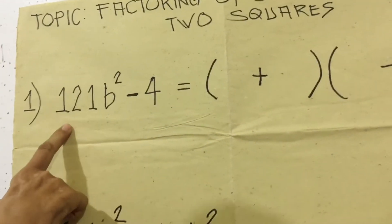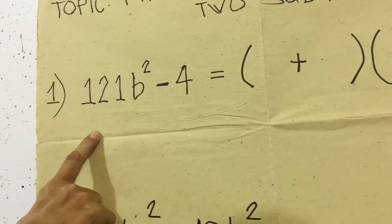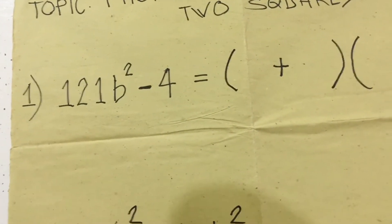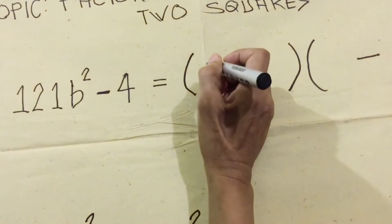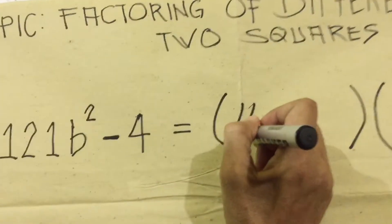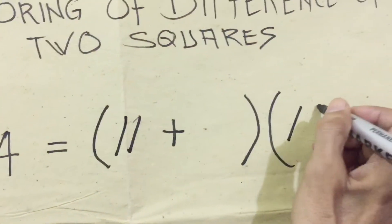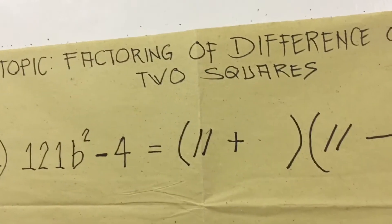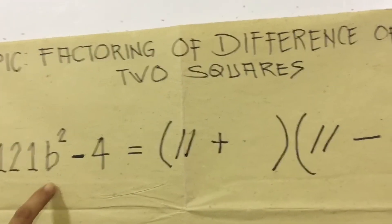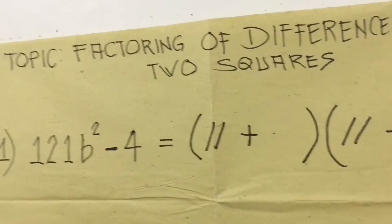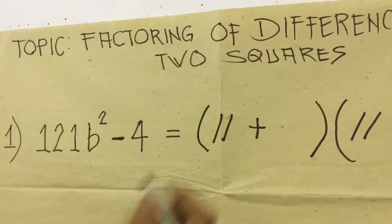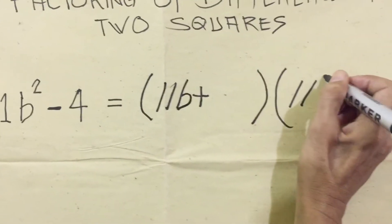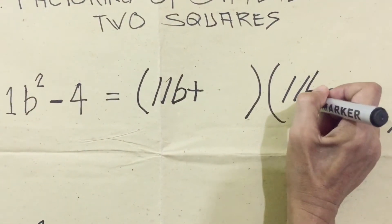Now we're going to get the factor of 121. The factor of 121 is 11 times 11 equals 121, so we have 11 and 11. Then 11 times 11 equals 121. And the factor of B-squared is B times B equals B-squared. Therefore, our answer here is B and here is also B.